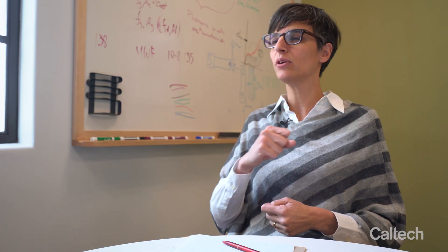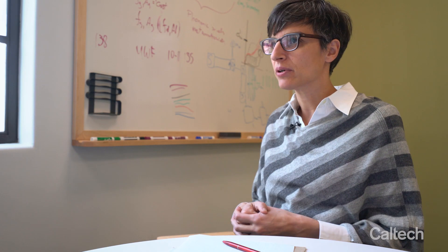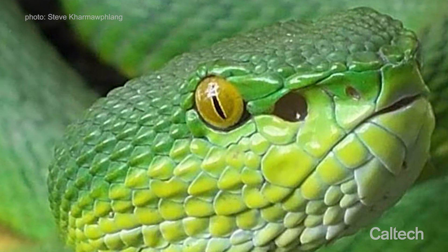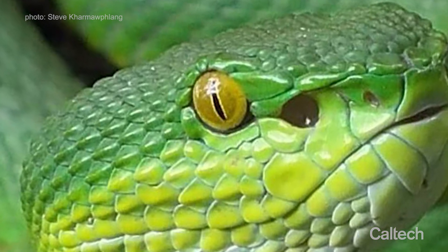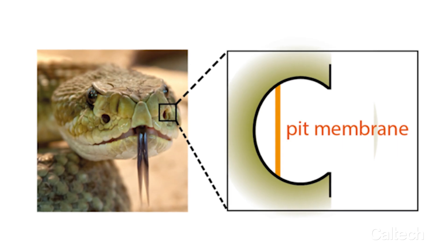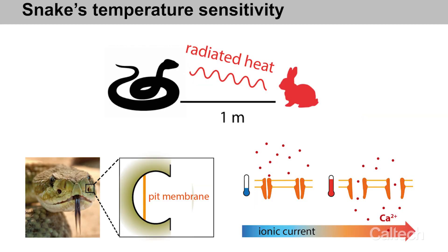We started looking in the natural universe to say what other biological systems actually have similar temperature sensitivity, and we encountered the pit vipers. Pit vipers are known to have an organ called the pit organ, which is effectively an organic membrane that snakes use to detect prey at a distance when they hunt at night.